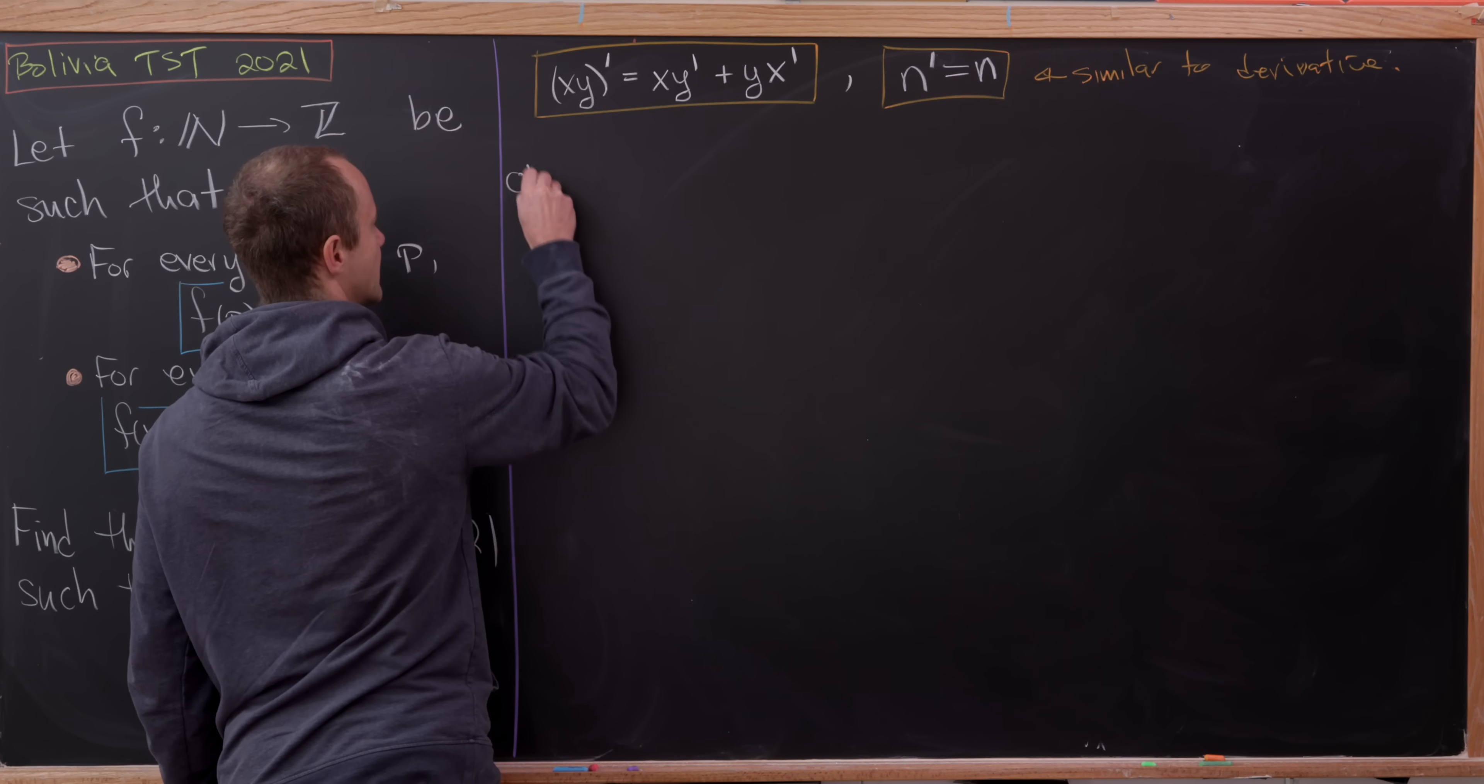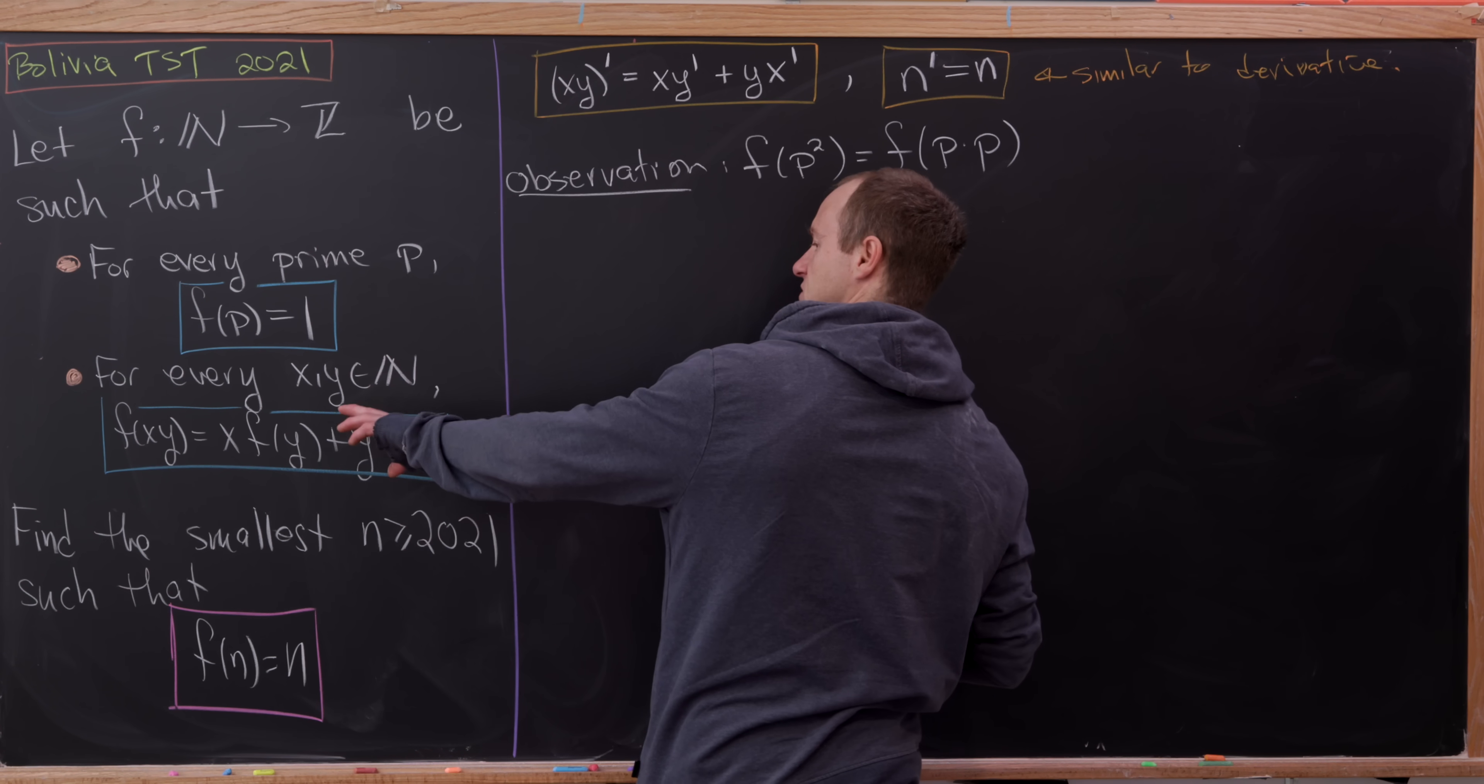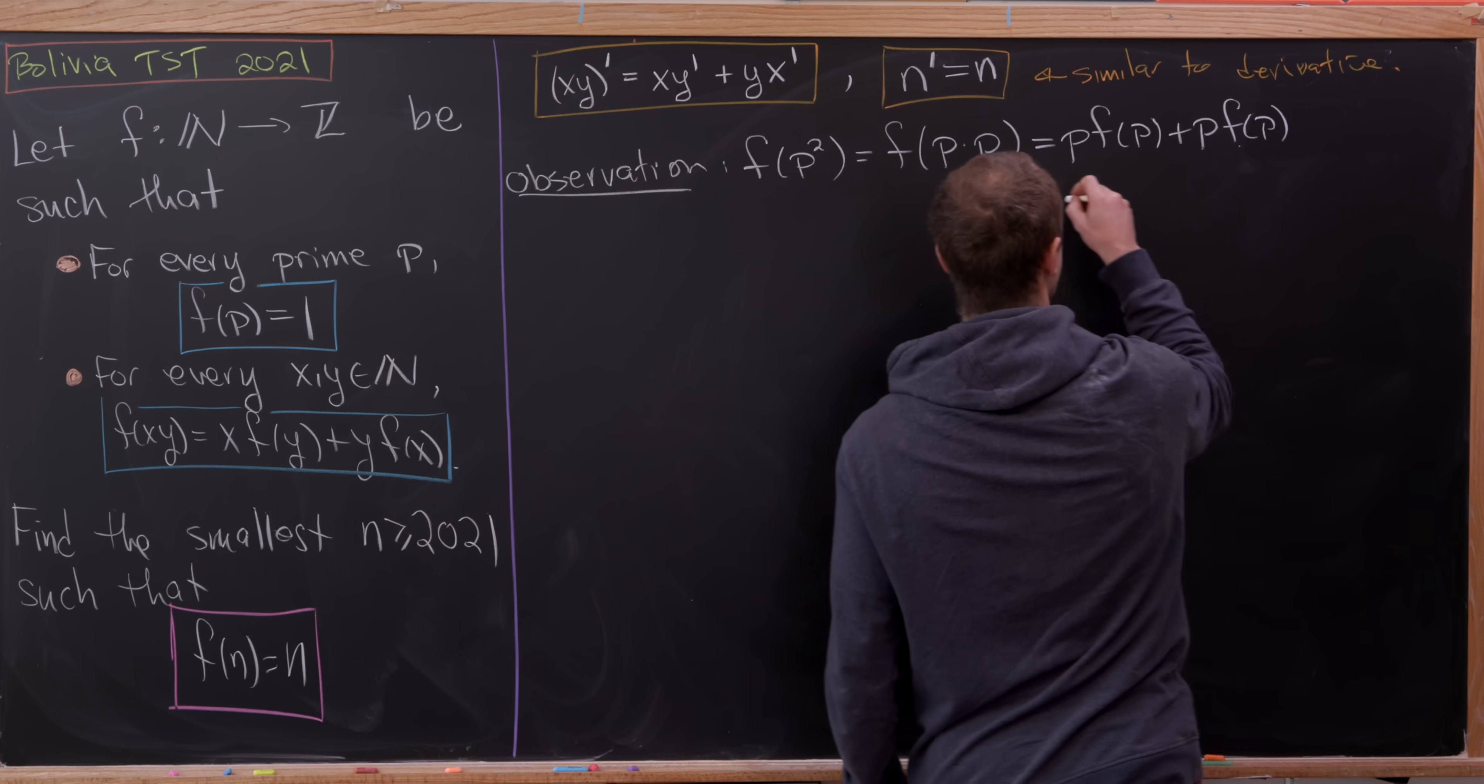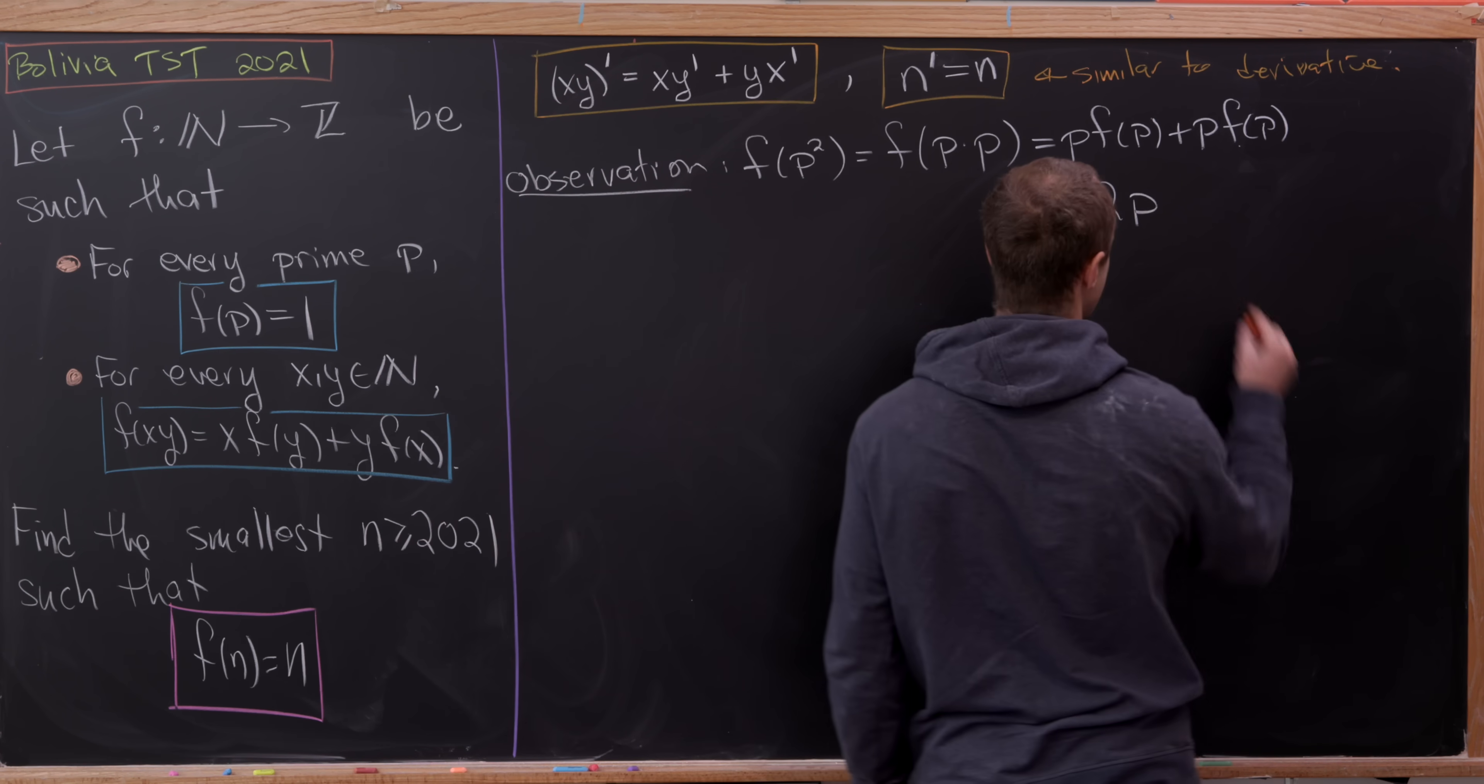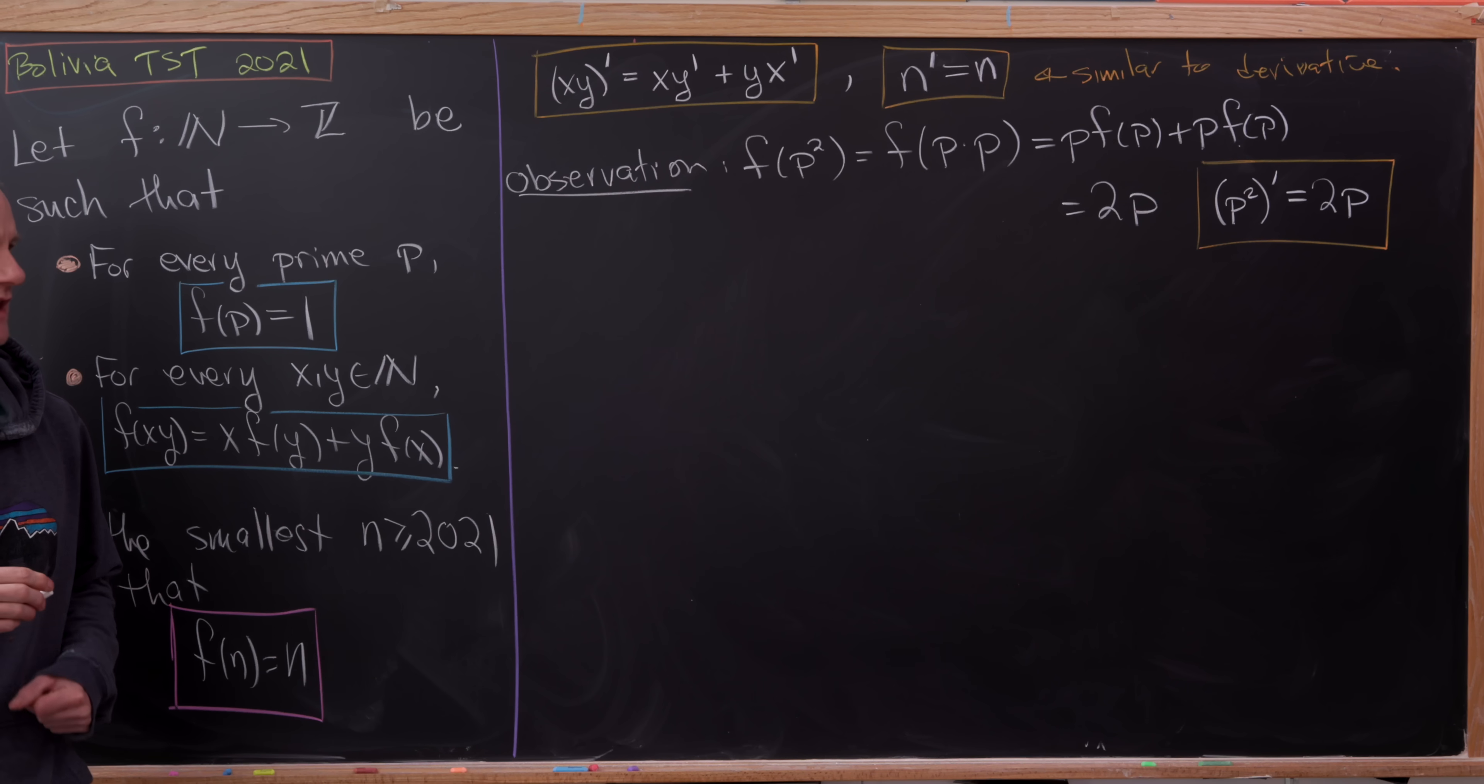I'm going to start with the following very simple observation. And that is, what does this function do to the square of a prime? This is in fact, pretty easy to calculate, because this is f of the prime times the prime. And so we can just use our rule over here, our product rule, where x and y are both equal to p. So we have p times f(p), plus another p times f(p). But we know that each of these f(p) is equal to one by our first rule. So that simply gives us two times p. But now one more time, I'm going to rewrite this in derivative notation. And look what we have here, we have the derivative, if you will, the arithmetic derivative of p² is equal to 2p.